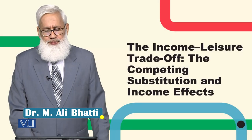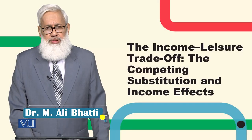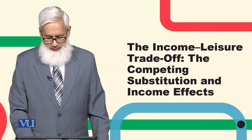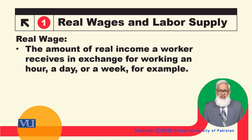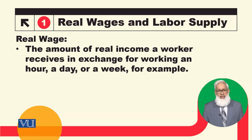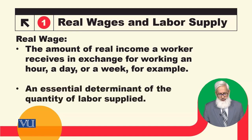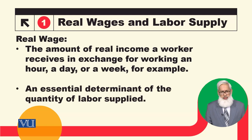Income may involve a trade-off between the competing substitution and income effects. We will talk about the relationship between real wage and the labour supply. By real wage, we mean the amount of real income a worker receives in exchange for working an hour or a day. Real wage is the most important determinant of labour supply.